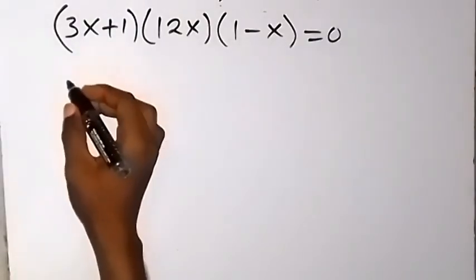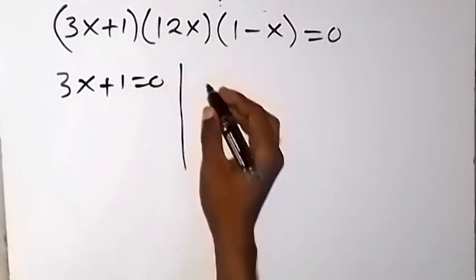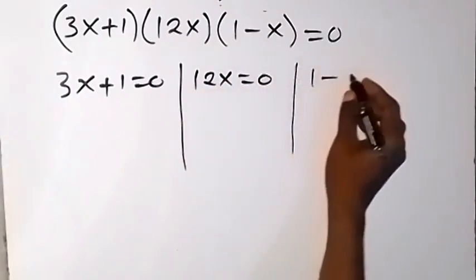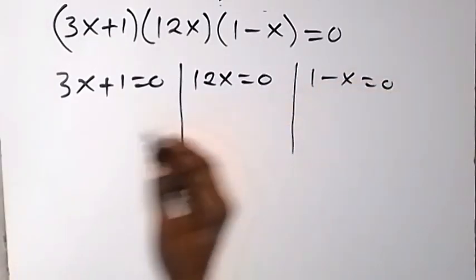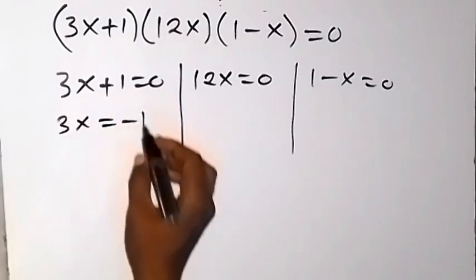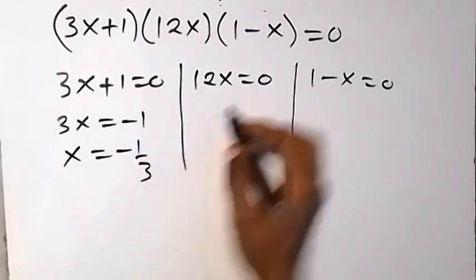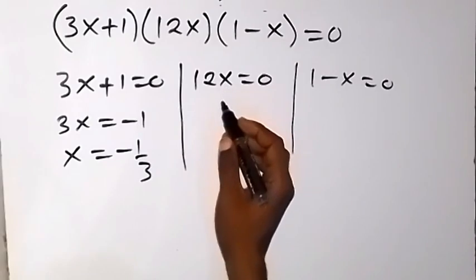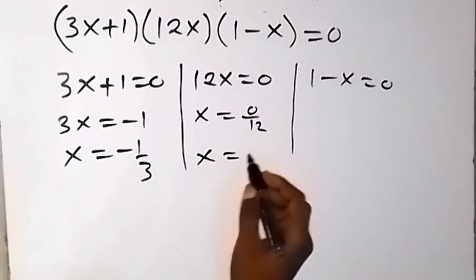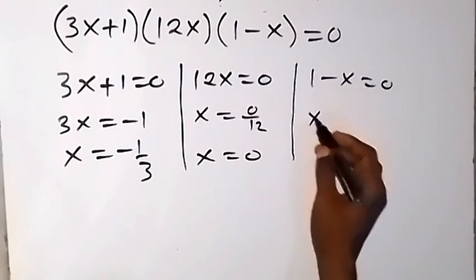We now have three possible cases. Case 1: 3x+1 = 0, giving 3x = -1, so x = -1/3. Case 2: 12x = 0, giving x = 0. Case 3: 1 - x = 0, giving x = 1.